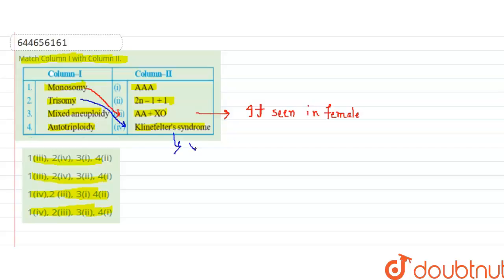It has extra X chromosome in human body and next mixed aneuploidy. Mixed aneuploidy is matched with 2n minus 1, plus 1